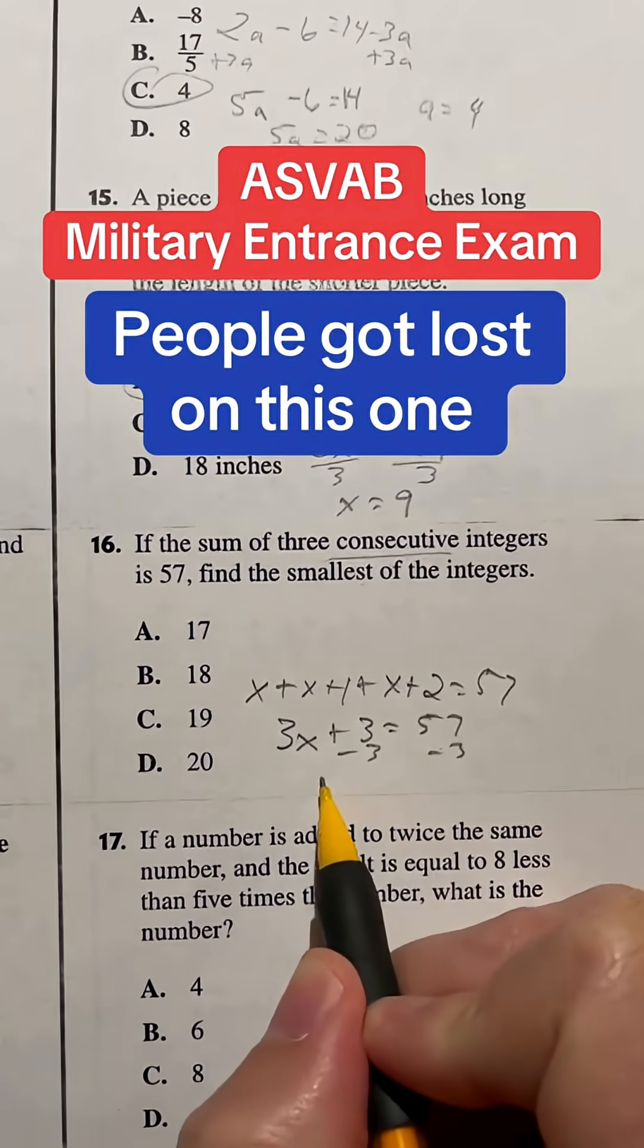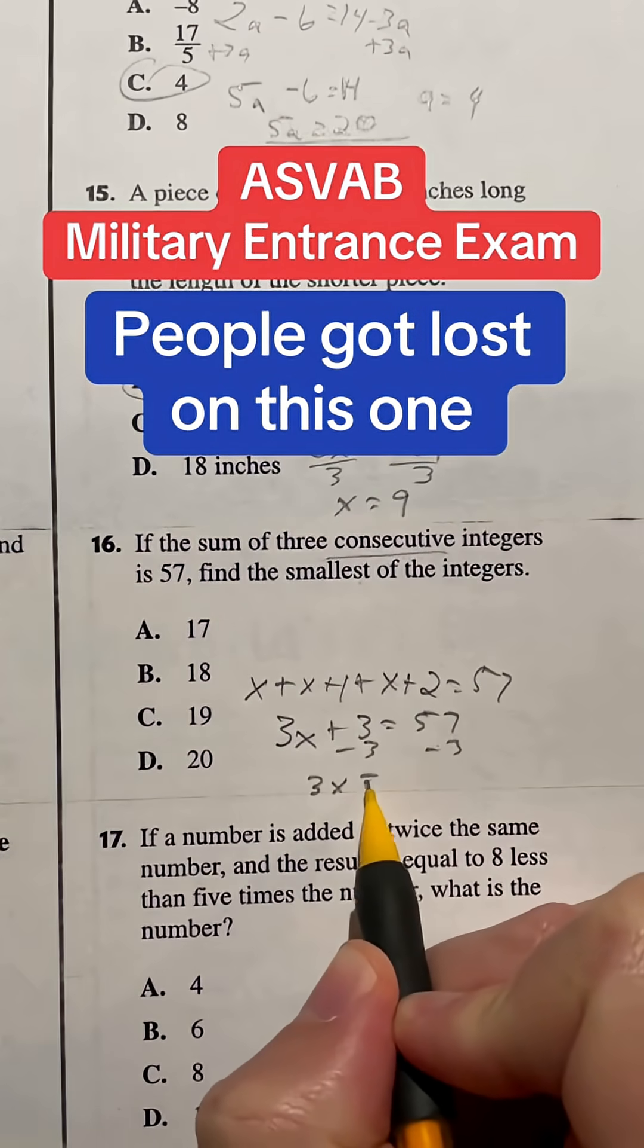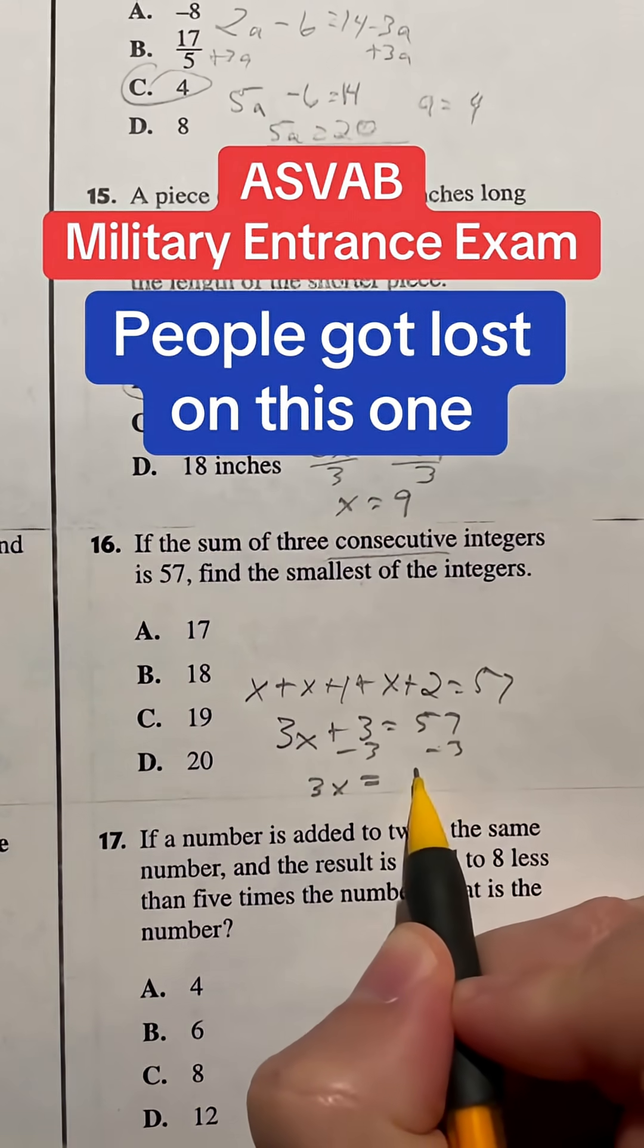I'm going to subtract the 3 from both sides, giving me that 3x is going to be equal to 57 minus 3, which is 54.